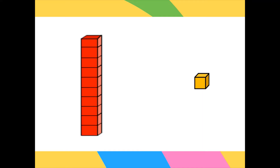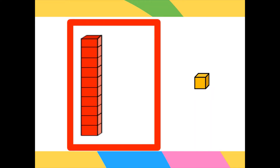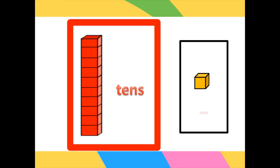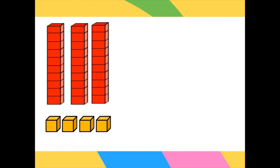Let's start. Let me present to you these blocks and find out what they represent. This set of blocks represents tens, and the other one represents ones. Once again, the first set represents tens and the second one represents ones. Is that understood? Very good.